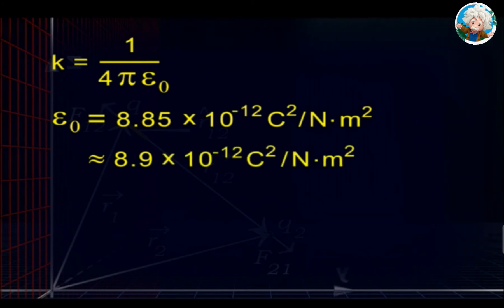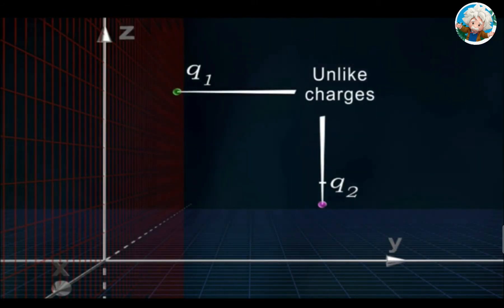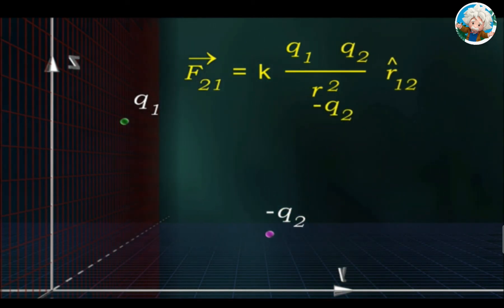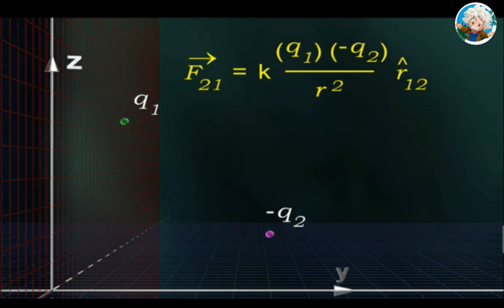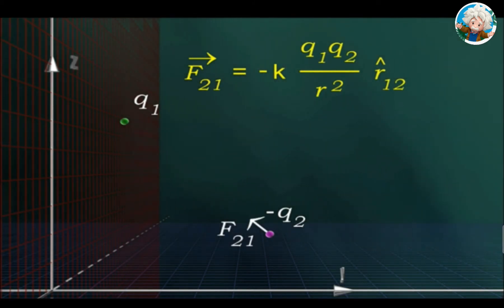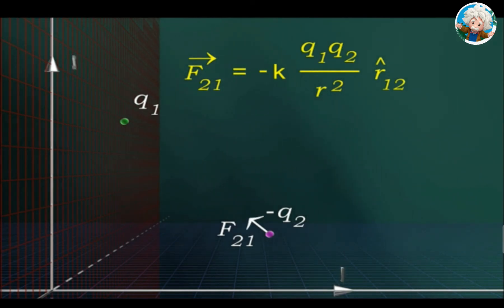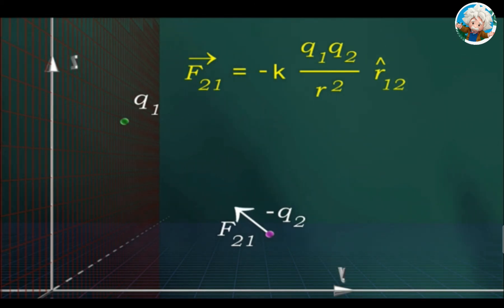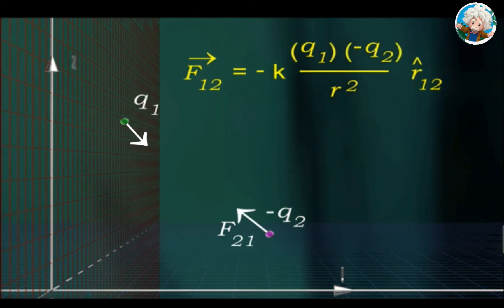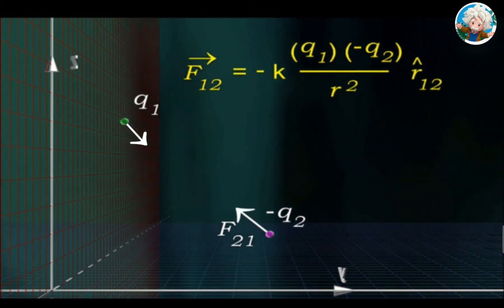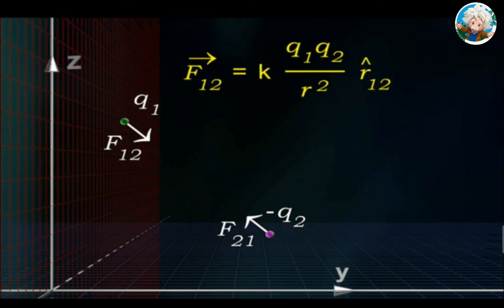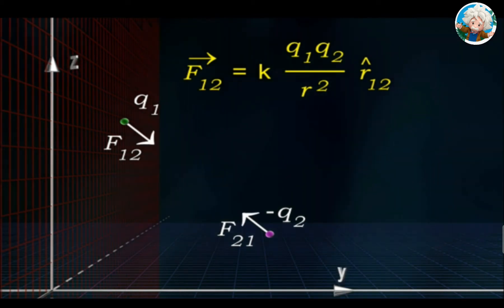k is expressed as 1 upon 4πε₀, where ε₀ has units of coulomb square per newton meter square. If two charges are unlike, considering q2 as negative: vector F₂₁ equals k·q1·(−q2)/r²·r̂₁₂, therefore vector F₂₁ equals −k·q1·q2/r²·r̂₁₂. And vector F₁₂ equals k·q1·q2/r²·r̂₁₂.